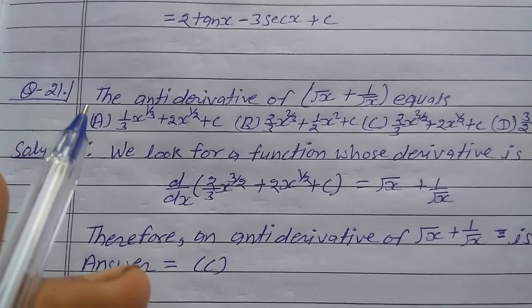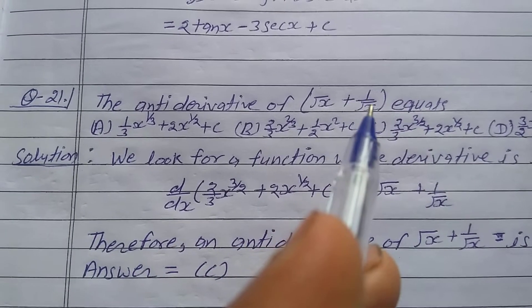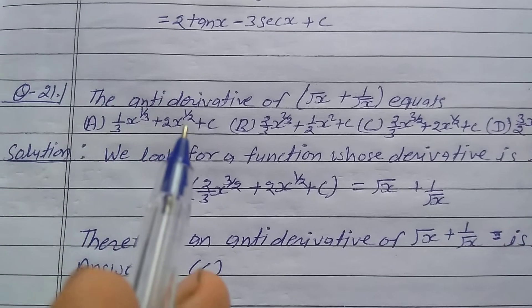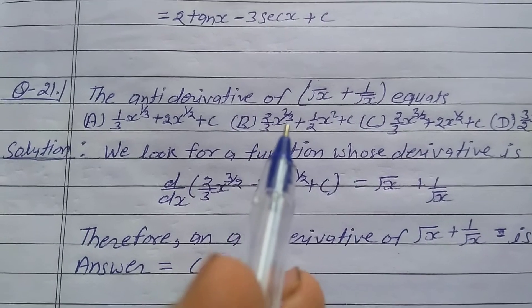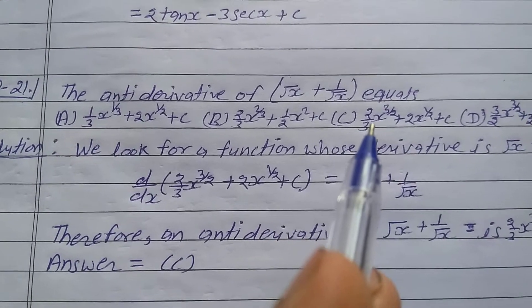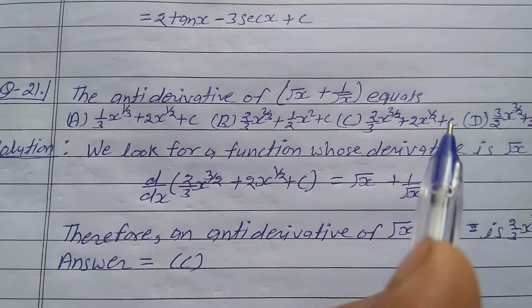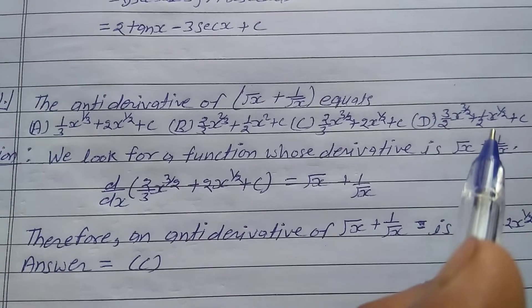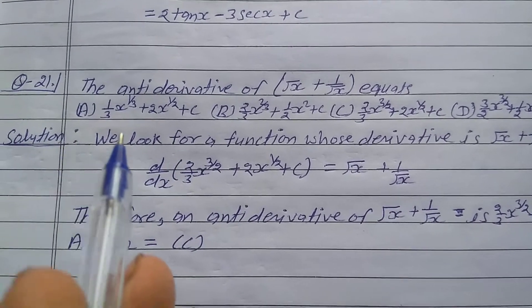Exercise 7.21, Class 12: The antiderivative of (√x + 1/√x) equals — option A: (1/3)x^(1/3) + 2x^(1/2) + c; option B: (2/3)x^(2/3) + (1/2)x^2 + c; option C: (2/3)x^(3/2) + 2x^(1/2) + c; option D: (3/2)x^(3/2) + (1/2)x^(1/2) + c.